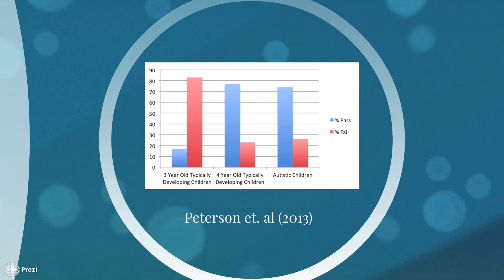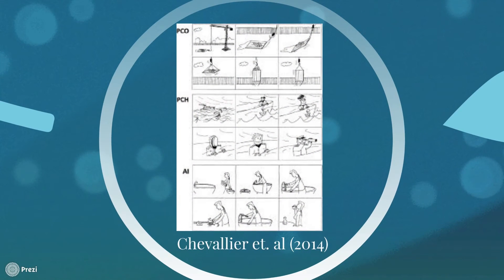Chevalier, another researcher, changed the environment of the testing situation and found better results for autistic participants as well. A study done by Chevalier tested the effects of having an experimenter in the room by having participants complete a theory of mind task in two conditions, differing in the way participants received information. In the social condition, a female instructor was in the room with the participant to give instructions and administer the test. In the non-social condition, participants were given instructions through a computer.